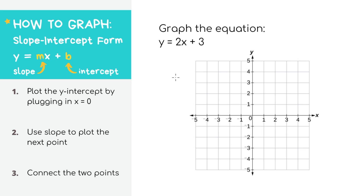Our first step here is just to plot the y-intercept. We know from just looking at the equation that b equals three. This is telling us the y-intercept — the point where our line crosses the y-axis — is zero, three. If you forget, the idea behind this is that when you plug in x equals zero in the equation, you'll get that y equals three.